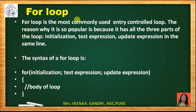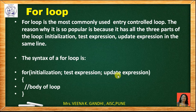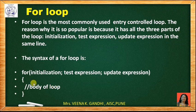The for loop is the most commonly used entry control loop. The syntax of the for loop is: 'for' followed by round brackets containing three statements — initialization of the loop control variable and semicolon, then the test condition, then semicolon, and then the update expression. Then close the round bracket, and inside the opening and closing curly braces you write the body of the loop.